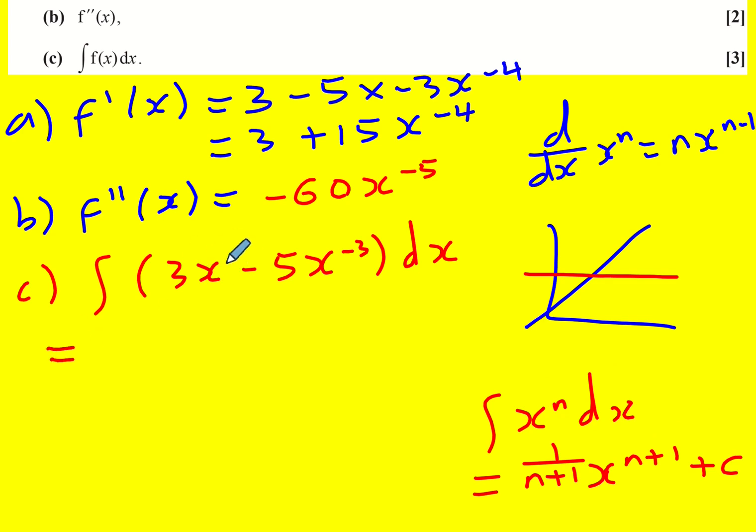So here I'm going to add 1 to the power, divide by the new power. It's going to be 3x squared. I'll put it all over 2. I can write it as 3 over 2.